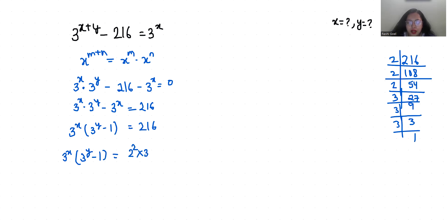Now 3^x × 3^(y-1), we can write it as 3^3 × 2^3 as well. Now if we compare first 3^x with 3^3, if the base are equal, then power are also equal. So x = 3 and 3^(y-1) = 2^3.